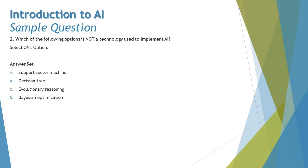Moving on to question two: which of the following options is not a technology used to implement AI? I want to quickly remind everyone that the word 'not' is used very smartly here. If you don't pay attention you may skip this word. We need to read each and every word very clearly. This is a straightforward question about the list of all technologies under AI.